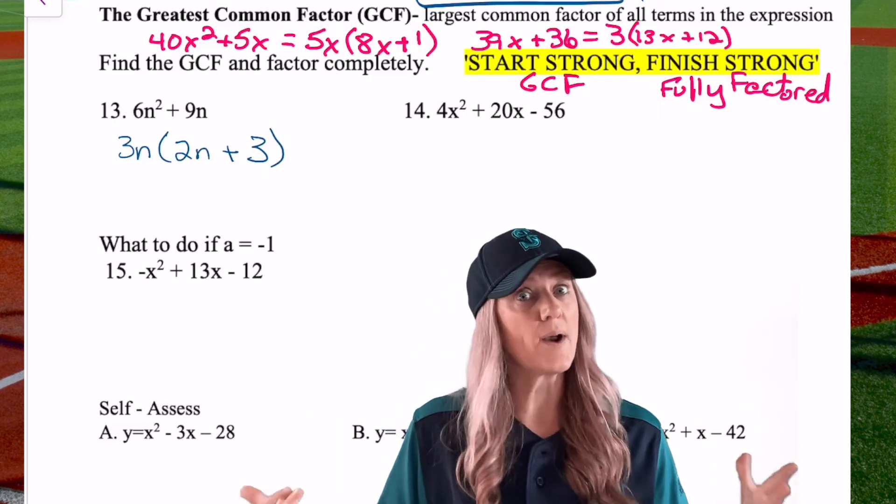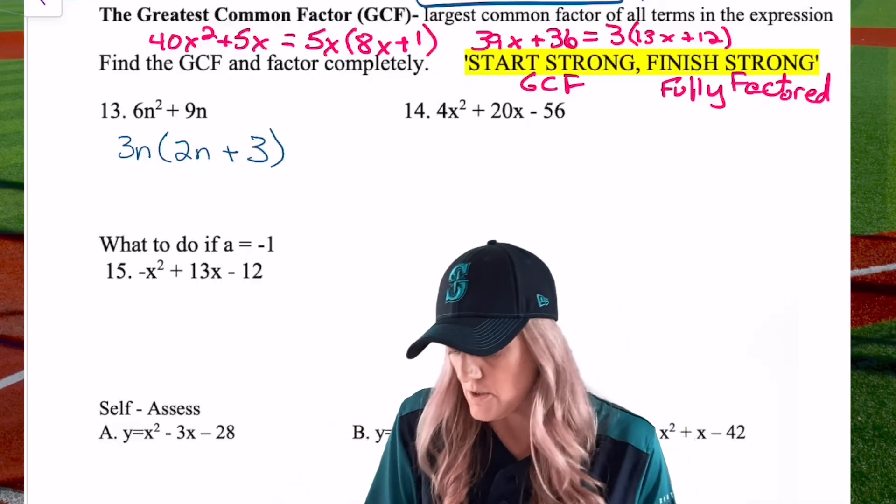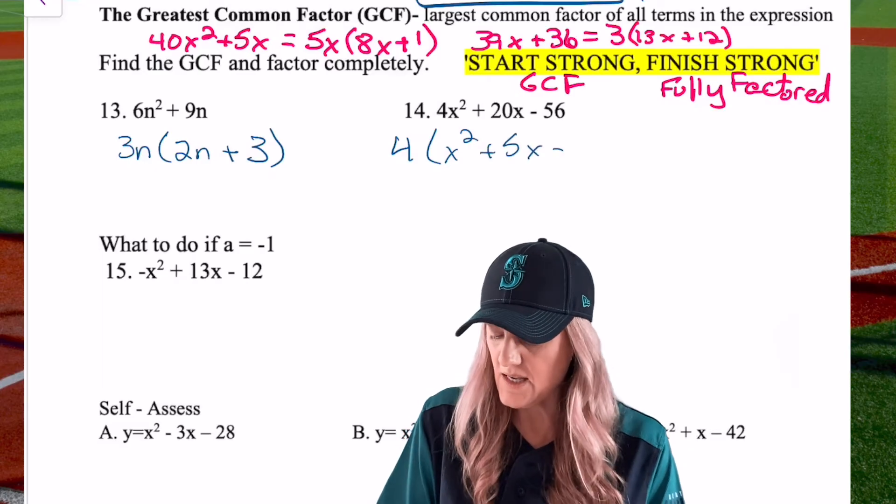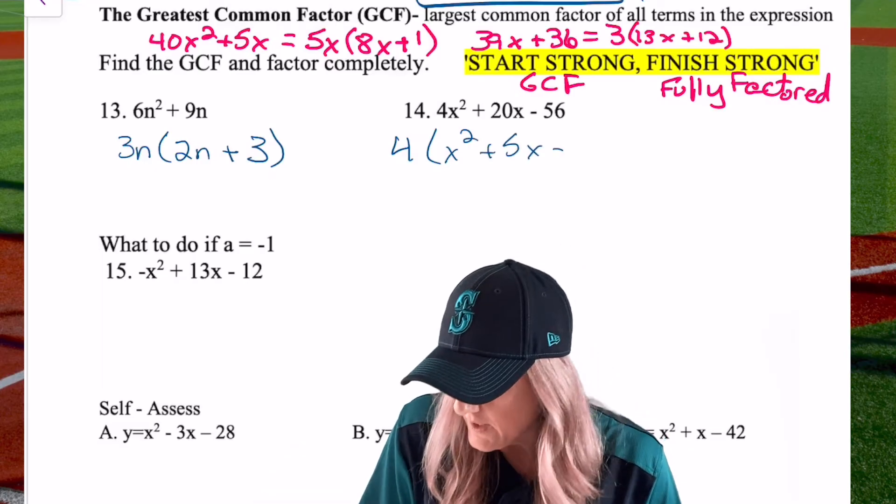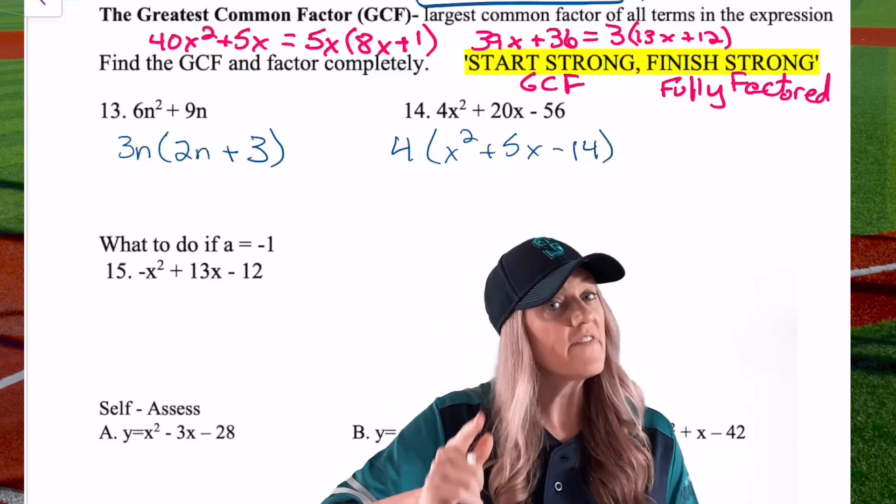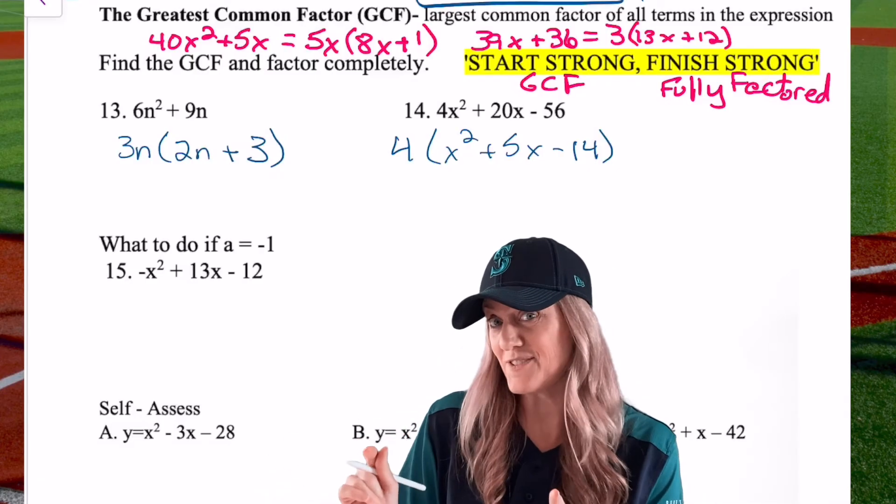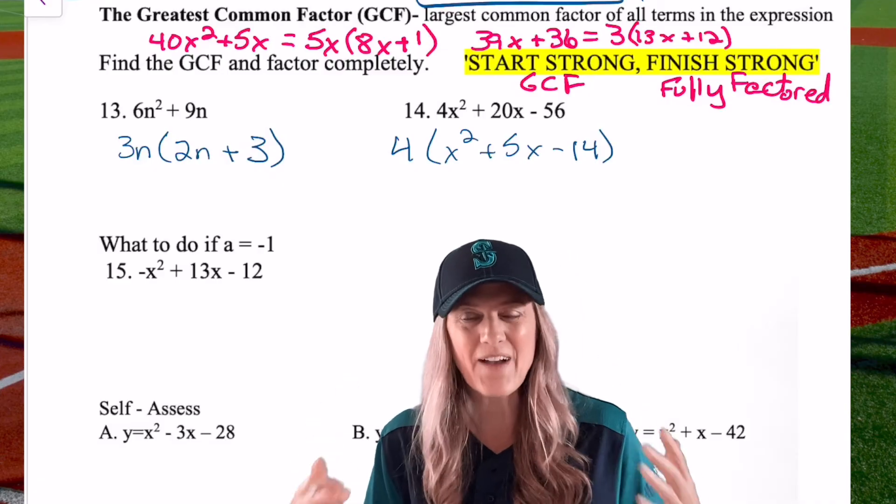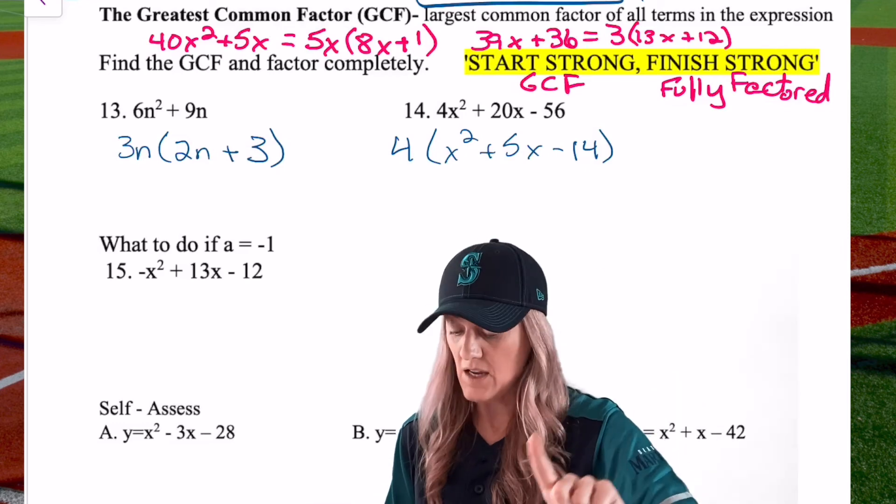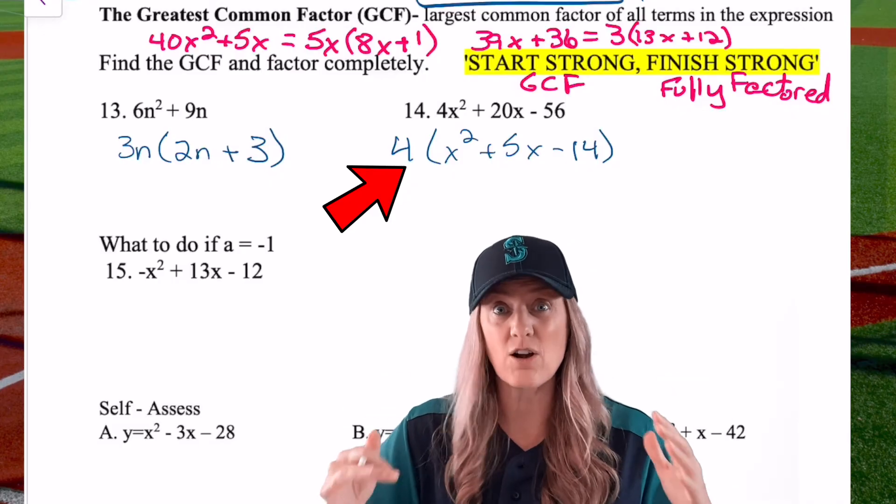Let's look at number 14. Our trinomial, three terms. This time we can factor out a 4. So let's factor that out. We get X squared plus 5X minus, what do we get? 14. Now, here's an example of we started strong, found the GCF, but have we finished strong? No, we haven't finished strong. Because X squared plus 5X minus 14 still factors. So let's go ahead to our crisscross method, find those factors. But other thing, don't lose the 4. 4 is part of the original expression. We need that in our final answer.